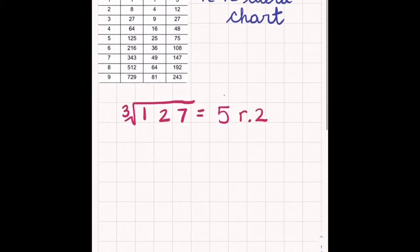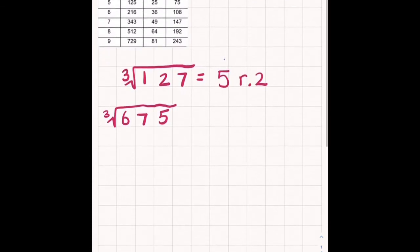Let's try one that is 3 digits. Let's find the cube root of 675. Let's go to my chart. Which cube is the closest to 675? Looks like 8 cubed. Because 8 cubed equals 512.